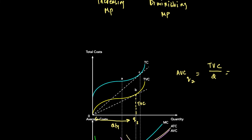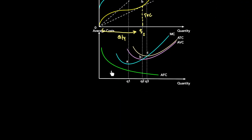Remember the slope formula is change in Y over change in X. So change in Y will be this distance, change in X will be this distance. The slope of the line drawn from the origin towards the curve gives you the value of AVC. We can also see that at the point where AVC is minimum, the quantity Q2 is the flattest possible line coming from the origin and touching the TVC curve.